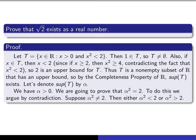Now I have to show that T has an upper bound. If x is an element of T, I claim that x is smaller than 2. If I can show that, then 2 is an upper bound for T. I explain why x must be smaller than 2 by arguing by contradiction: if x were bigger than or equal to 2, then x squared would be bigger than or equal to 4, which contradicts the definition of x as having a square smaller than 2. Therefore x is smaller than 2 for every x in T, so 2 is an upper bound for this set.